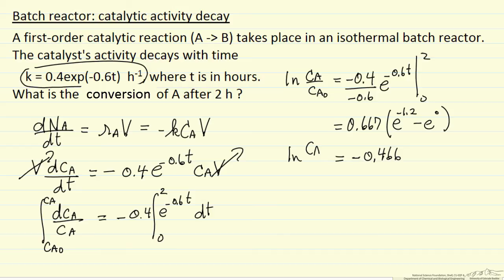Of course the left side is still Ca over Ca0. So now I am going to take the exponent of both sides, because I want to solve for Ca over Ca0, and so it is this exponent, which ends up being 0.627.